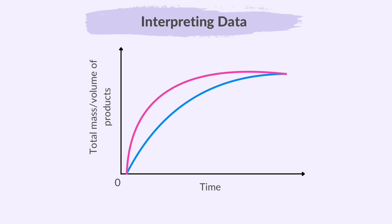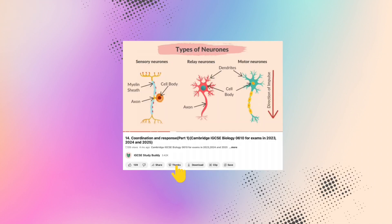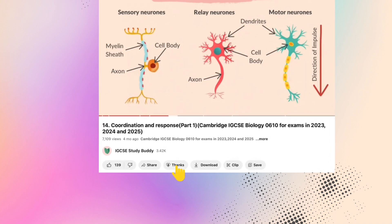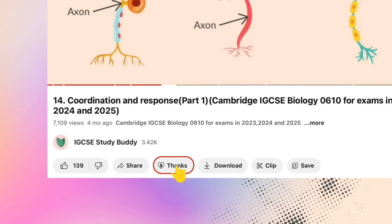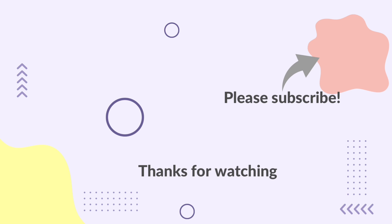That concludes Part 2 of Topic 6 – Chemical Reactions. Are you enjoying our videos? Are they helping you? You may use YouTube Super Thanks to send us thanks. Hope this video helped you. Please share your thoughts and suggestions in the comments section. Thank you for watching and please don't forget to subscribe to IGCSE Study Buddy for more revision videos. Bye!